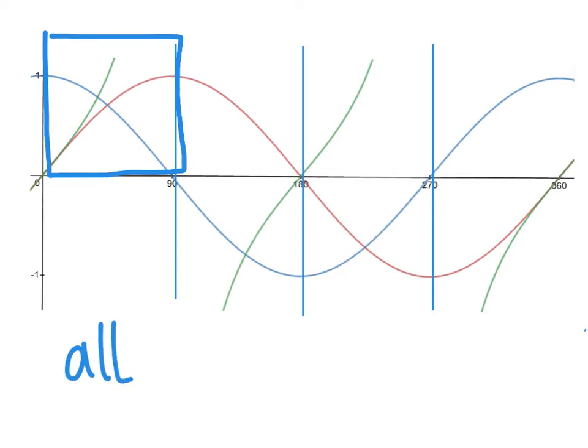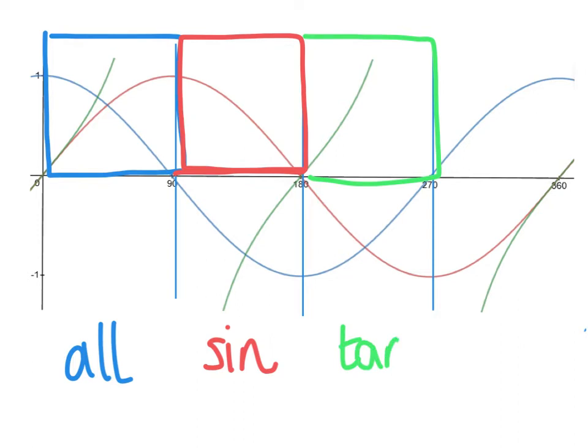If we look at these boxes individually, you'll notice that all of our graphs within this box here are positive between zero and 90. In the second box between 90 and 180, you'll notice only the red one, the sine graph, has a positive answer. In the third box, only the tan graph is positive within there. And in the fourth box, only the cos graph.